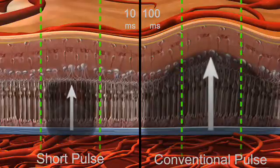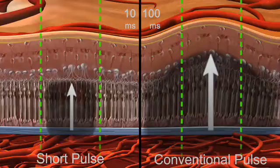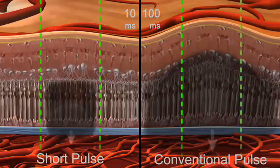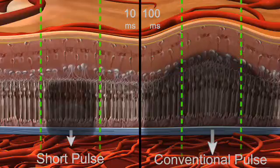Decreased anterior spread of heat into the retina results in reduced damage to the inner retina and nerve fiber layer. Limited posterior heating of the choroid decreases activation of the choroidal pain receptors, which can minimize patient discomfort.